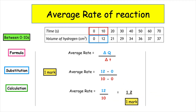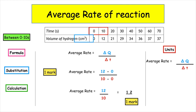The third mark in this calculation is to make sure that we can give the correct units. We use the equation average rate is equal to change in quantity over change in time. The quantity we've been given in the table of results is centimetres cubed, and for time we're working in seconds. So we would write that as centimetres cubed s to the minus 1.